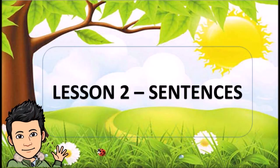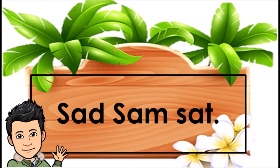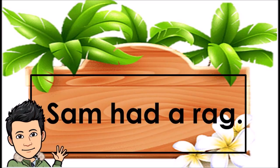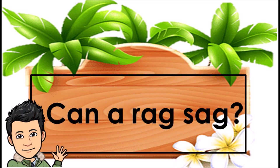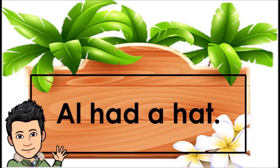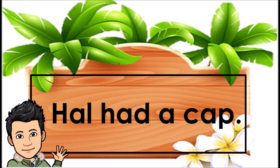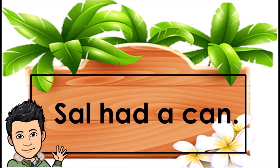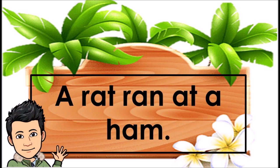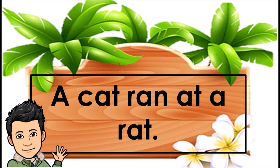Lesson 2. Sentences: Sad Sam sat. Sam had a rag. Ken a ragsag. Al had a hat. Hal had a cap. Sal had a ken. A rat ran at a ham. A cat ran at a rat.